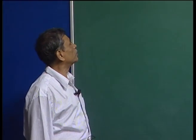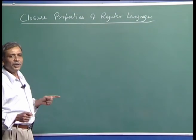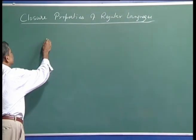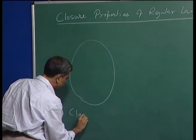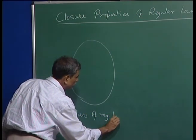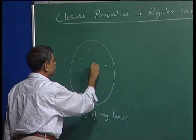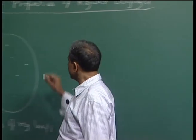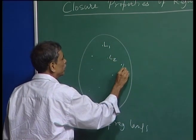Today, we discuss closure properties of regular languages. Let us understand what we mean by this phrase 'closure properties'. Remember that the class of regular languages means the set of all regular languages — that is the one we have been referring to as the class of regular languages. Each element of this class is a language and it is regular: L1, L2, L3, and so on.